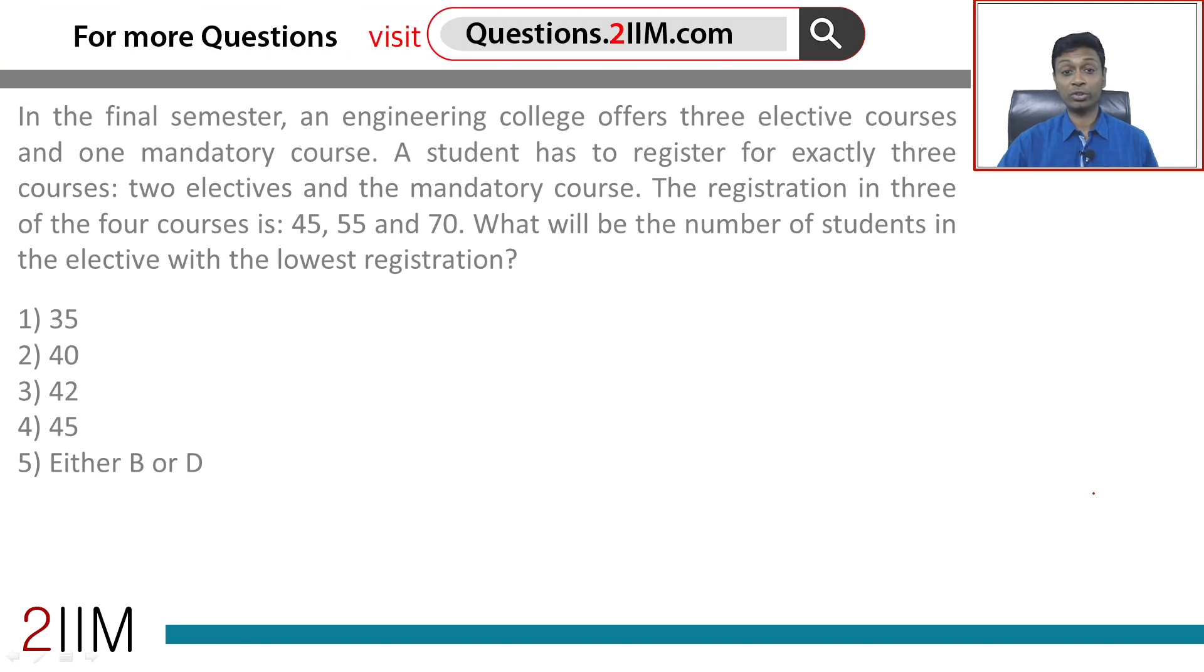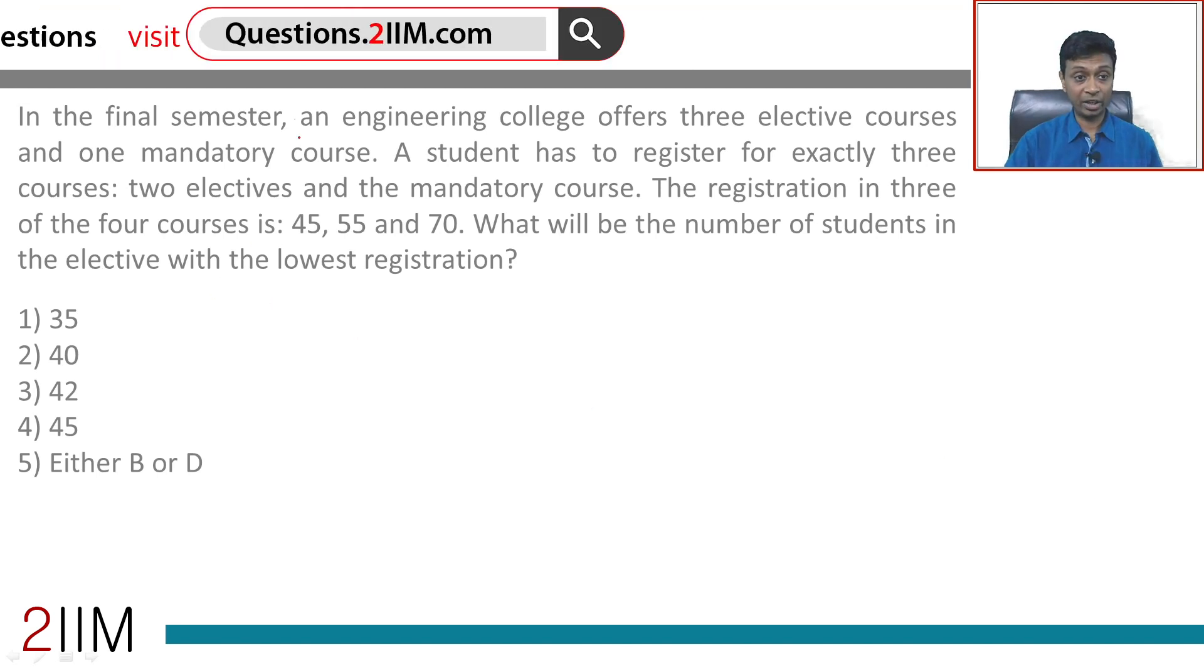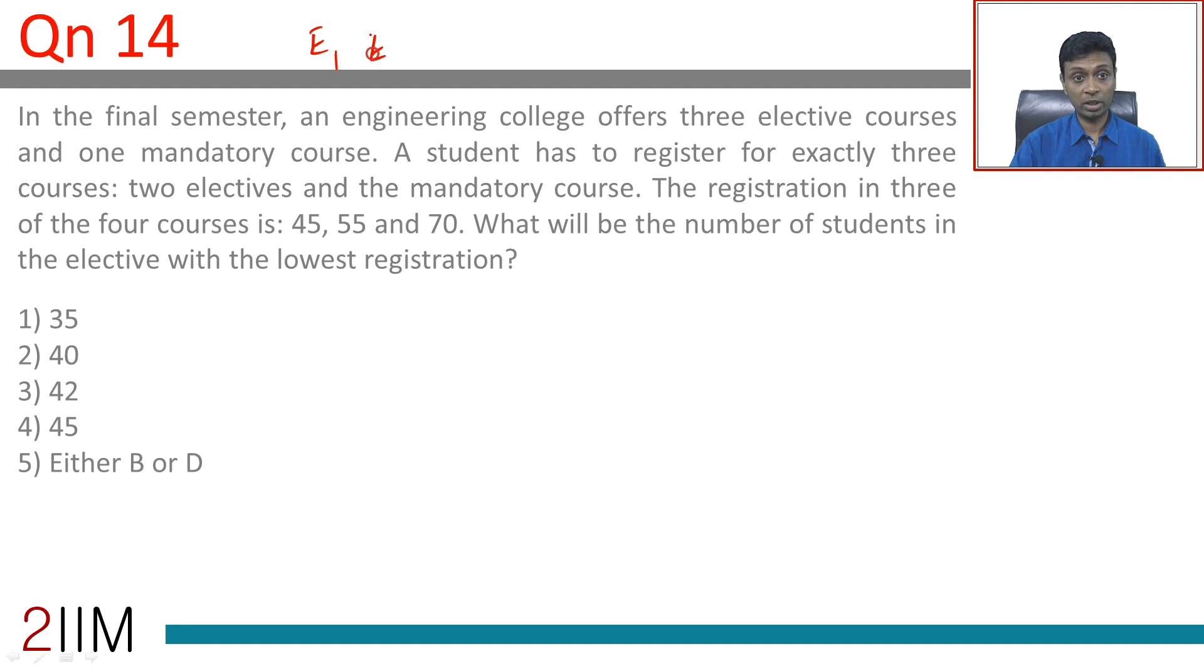In the final semester an engineering college offers three elective courses and one mandatory course, so let us say E1, E2, E3 and M.